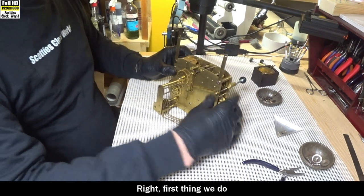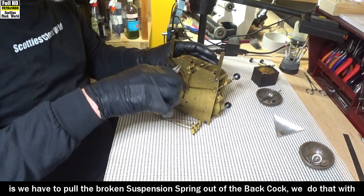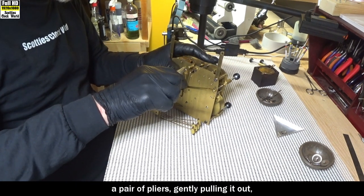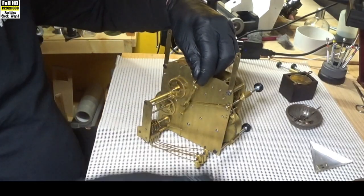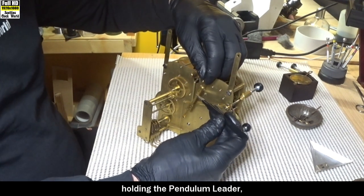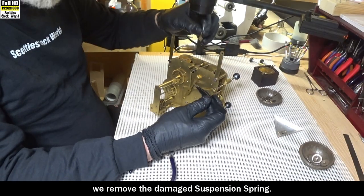First thing we do is we have to pull the broken suspension spring out of the back cock. Do that with a pair of pliers, gently pulling it out. And then, pulling the pendulum leader, we remove the damaged suspension spring.